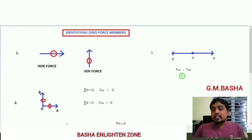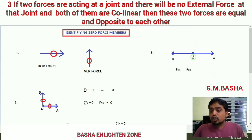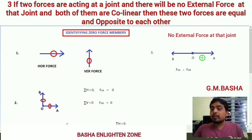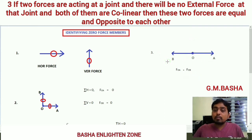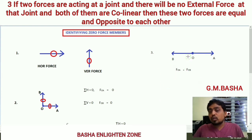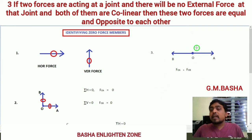Third point: if two forces are acting at a joint and these two forces are collinear to each other — meaning they are acting in the same line — then these forces must be equal and opposite to each other. That is, the force in member OA will be equal to the force in member OB. There is no vertical force to resolve vertically here. If I am resolving horizontally: force in member OB minus force in member OA equal to zero, because both are acting away from the joint.